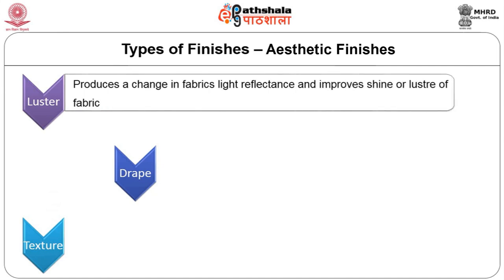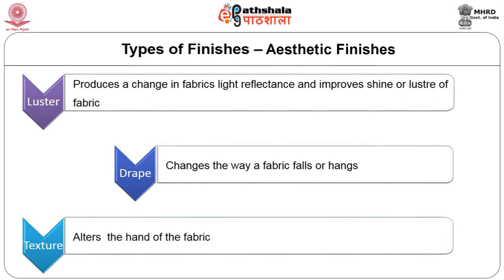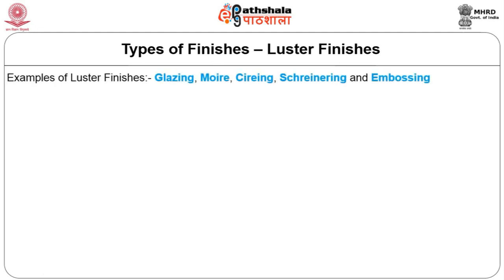The next category is aesthetic finishes, again categorized into lustre, drape or texture finishes. Lustre finish produces a change in the fabric's light reflectance and improves the shine or lustre. Drape finishes change the way a fabric falls or hangs. Texture finish alters the hand of the fabric. Examples of lustre finish are glazing, moiré, schreiner, and embossing.